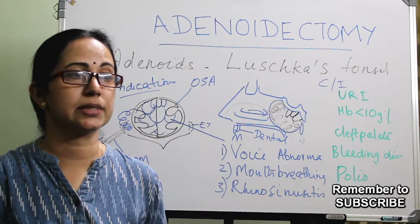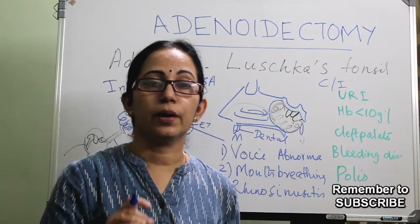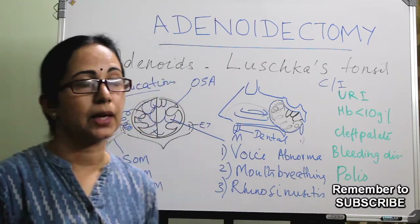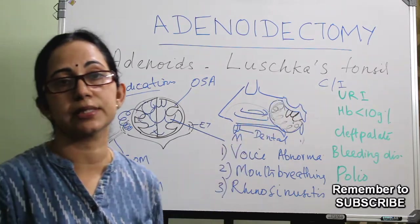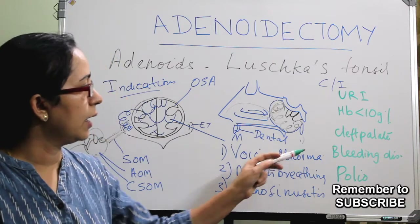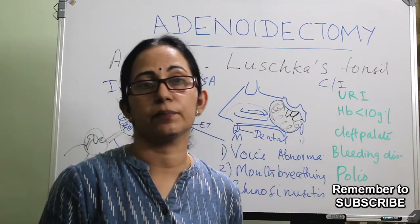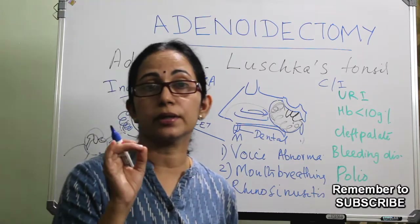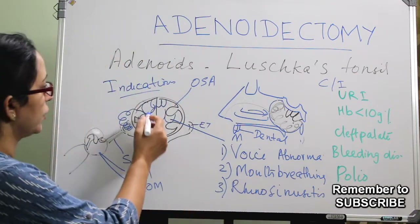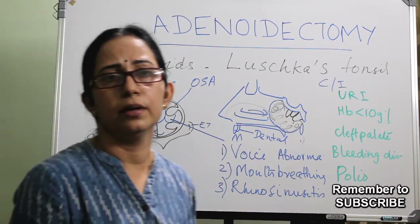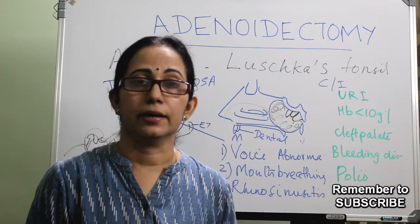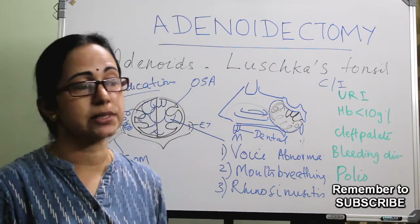The contraindications: acute infection is an absolute contraindication — treat the upper respiratory infection and wait a minimum of 3 weeks before surgery. Hemoglobin level less than 10 g% is a contraindication; correct the hemoglobin to at least 10 g%. Cleft palate — both overt and submucous cleft palate are contraindications, but not absolute. You can still do adenoidectomy but only a partial adenoidectomy, removing adenoid obstructing the choana and keeping adenoid tissue over the cleft so that velopharyngeal insufficiency will not happen later.